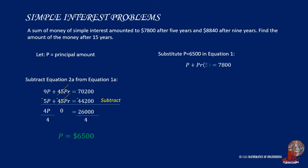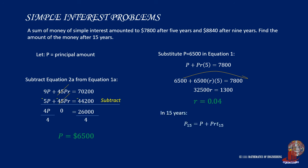Replacing P as $6,500 in equation 1: 6,500 plus 6,500 times R times 5 equals 7,800. Arranging terms gives 32,500R equals 1,300. Dividing each side gives R equal to 0.04, or 4%. Solving for the amount after 15 years: 6,500 plus 6,500 times 0.04 times 15, which equals $10,400.